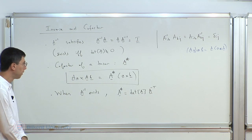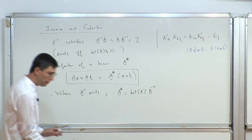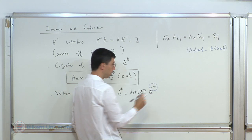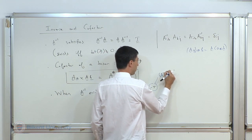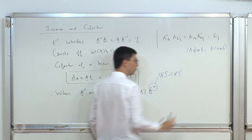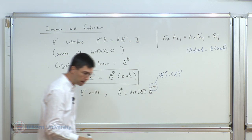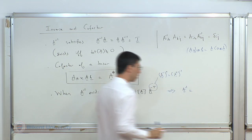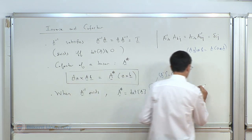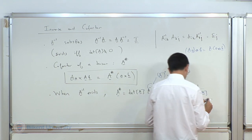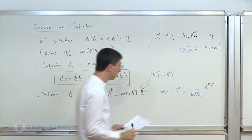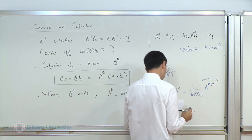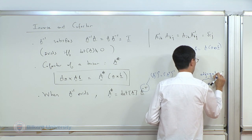Now I move on step by step to the eigenvalue problem. In an eigenvalue problem, we seek vectors V for a tensor A such that A operating on V gives a scalar multiple lambda of V. We're looking for non-trivial solutions — V not equal to zero — because if V is zero it holds for any lambda. V is the eigenvector, lambda is the eigenvalue.